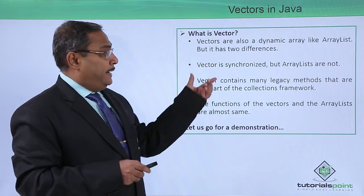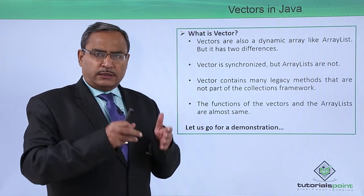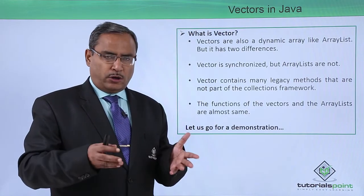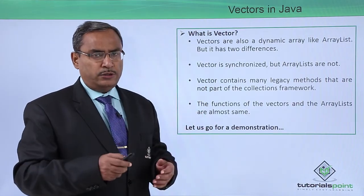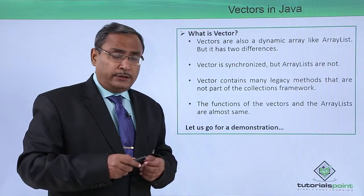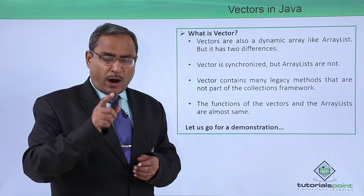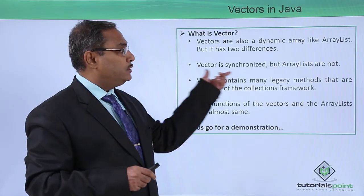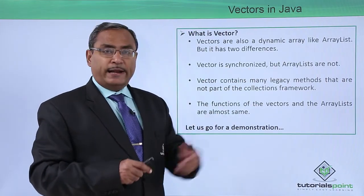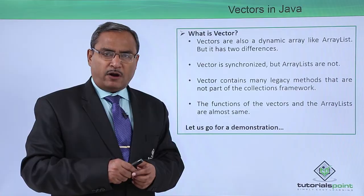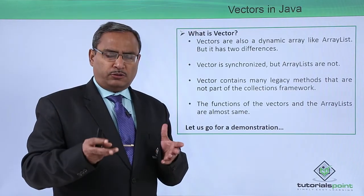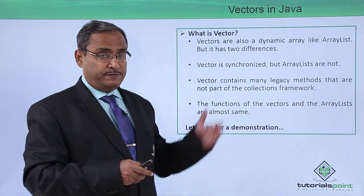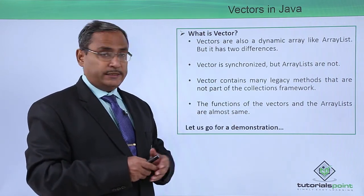In the case of vector, vector objects will be created and methods under this vector class can be called. But in a multi-threaded environment, at a time only one thread can call these methods — that's why it is called synchronized. But in the case of ArrayList in a multi-threaded environment, multiple threads can access the methods of the ArrayList object.